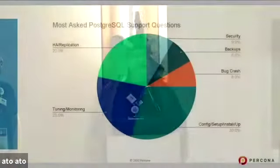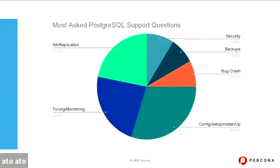We're going to talk about problems we see over and over again. I started this presentation by talking with our support engineers and asking what they see consistently in production Postgres environments. They provided data breaking down the most common issues — configuration, setup, installation, upgrades, tuning, monitoring, HA replication, security, backups, and crashes. Rather than just listing categories, I want to go in depth into what those look like, so we'll count down David Letterman-style.